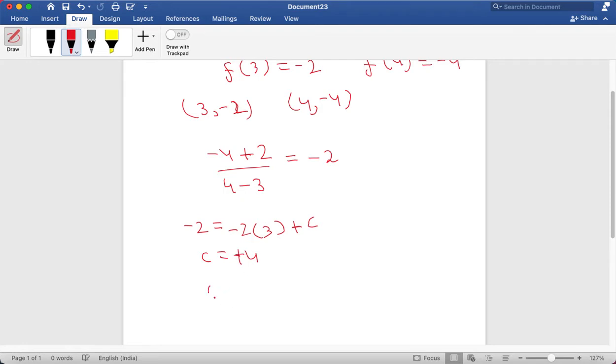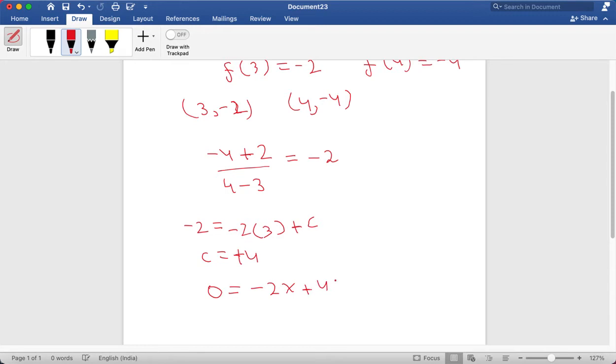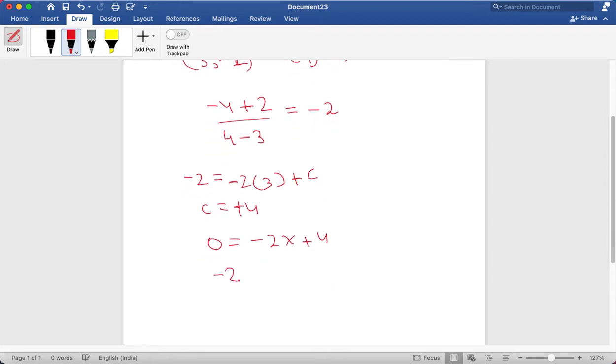So 0 is equal to minus 2x plus 4 so minus 2x will be equal to minus 4 so x will be equal to 2.